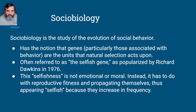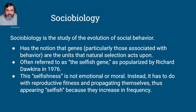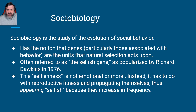You can kind of already get an idea of what that's about. It's the study of the evolution of social behaviors. This has the idea that genes, particularly those that are associated with behaviors, are the units that natural selection acts upon. We're all about behavior in this course. The behavior is genetically passed on.